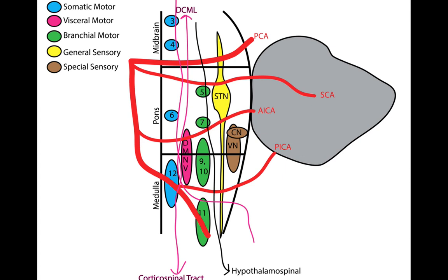We also have our hypothalamospinal fibers. Those are fibers going from the hypothalamus down through the brainstem into the spinal cord, ultimately destined for the cervical ganglion.